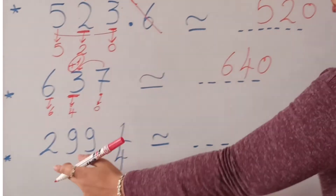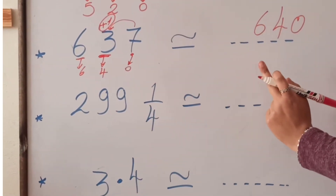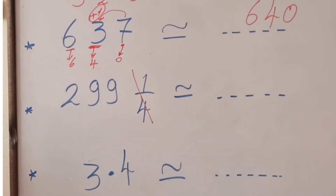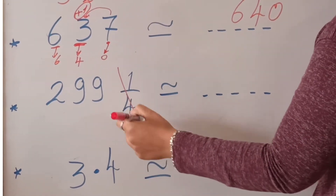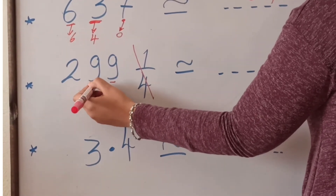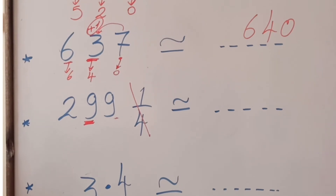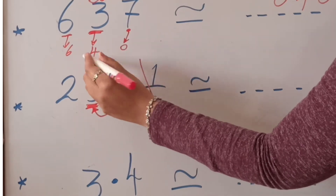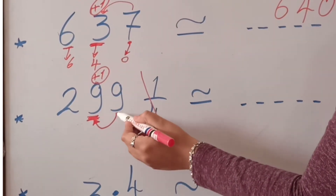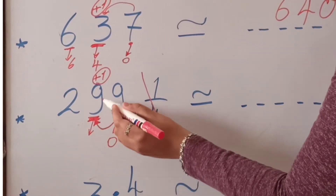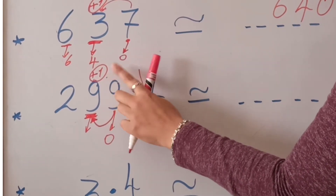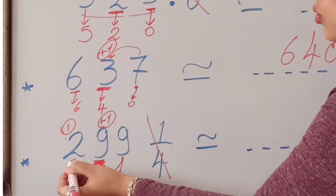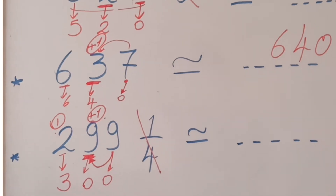In this example, we have 299 and a quarter. We are in the whole part, so we cross the fraction because the fraction converts to the decimal part. We look at the tens digit. Ask the digit to its right, which is 9. Is 9 poor or rich? 9 is rich, so it gives 1: 9 plus 1 equals 10. I can't write 10 in one place, so we put 0 and carry 1. Then 9 plus 1 equals 10 again — put 0 carry 1 — and 1 plus 2 equals 3. The answer of the approximation will be 300.